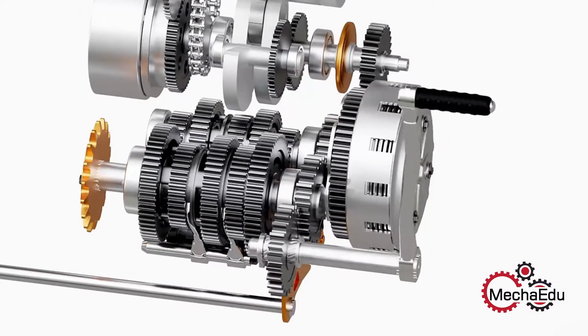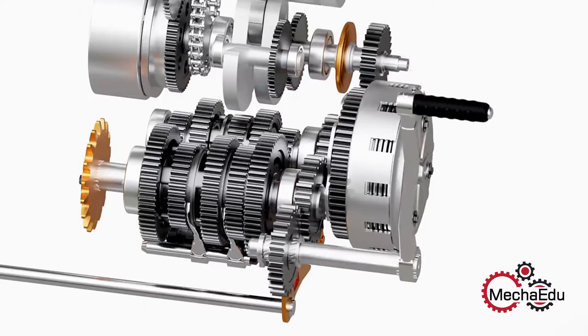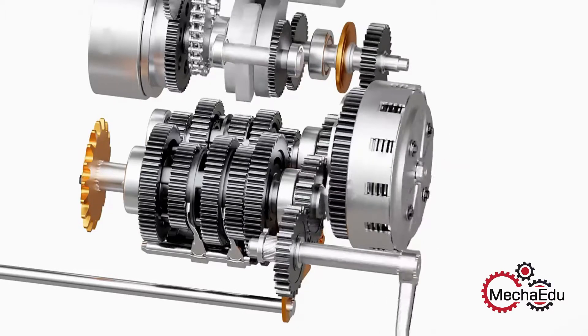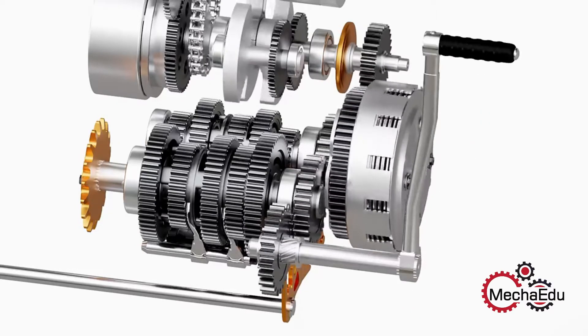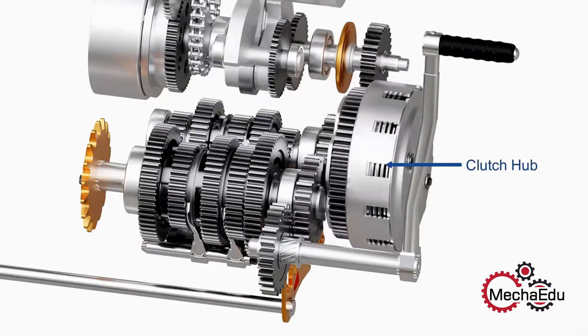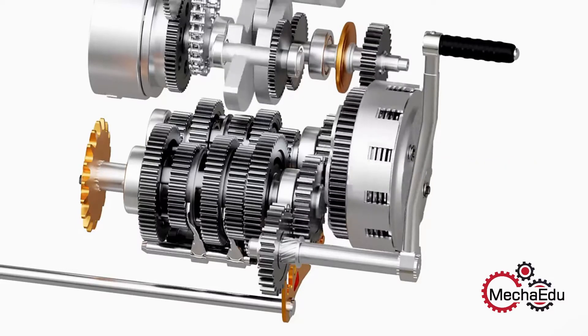As the kickstarter lever is descended, a helical spline forces the gear to slide and engage with a freewheeling gear on the main shaft. As the lever is descended further, the gear spins on its axis and transfers the power to the clutch hub. The clutch hub transfers the power to the crankshaft and eventually to the engine.